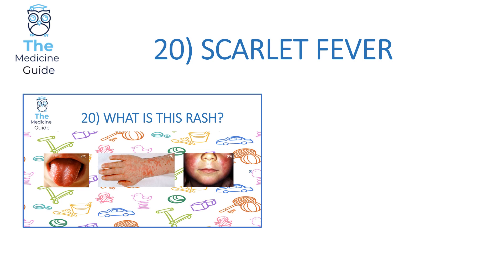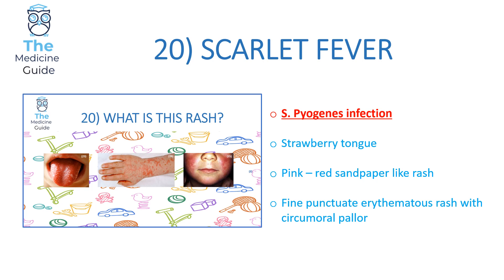Rash 20 is scarlet fever, caused by Streptococcus pyogenes. Children present with a strawberry tongue — very prominent papillae and a bright red tongue. They also complain of a pink-red sandpaper-like rash that feels rough to the touch. There is also a fine punctate erythematous rash with circumoral pallor — a reddish-pink rash on the cheeks and around the nose area, sparing the mouth region.